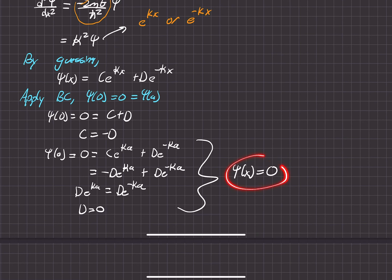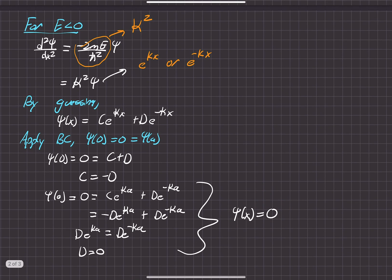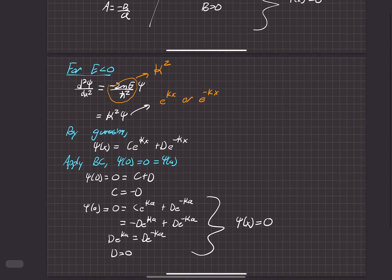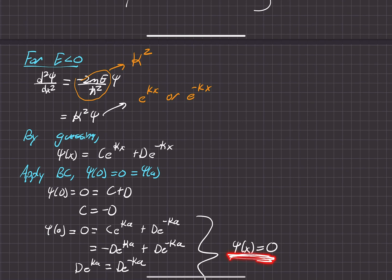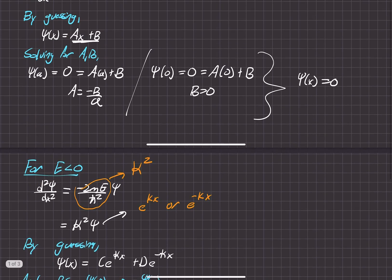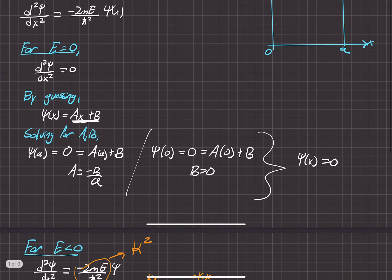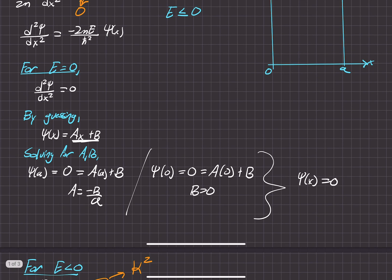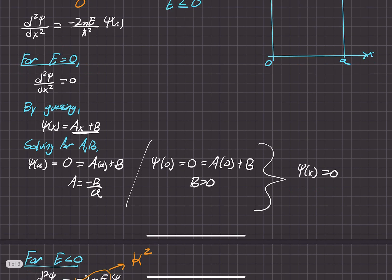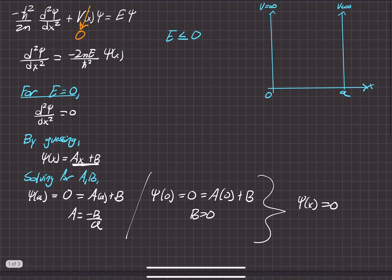So psi of x is equal to 0 for this case as well. We've shown that the wave function cannot exist for negative energies, and we previously showed it cannot exist for energies equal to 0, which was the whole point of the problem.